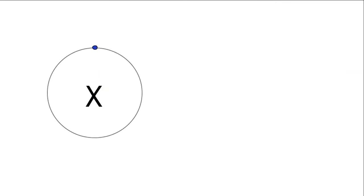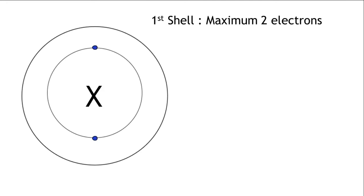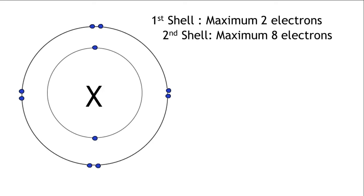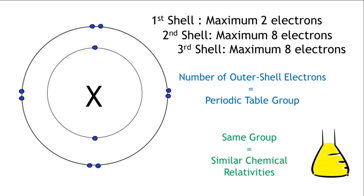So electrons are arranged in shells or energy levels around the nucleus. Each energy level has a maximum number of electrons it can hold. The lowest energy level is always filled first, and can only hold two electrons, while the levels after this can hold a maximum of eight electrons. The number of electrons in the outer shell of an atom determines which group the element belongs to on the periodic table, and elements in the same group have similar reactivities.